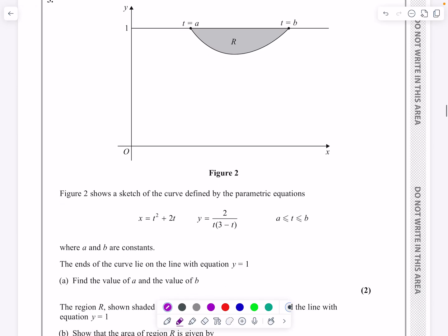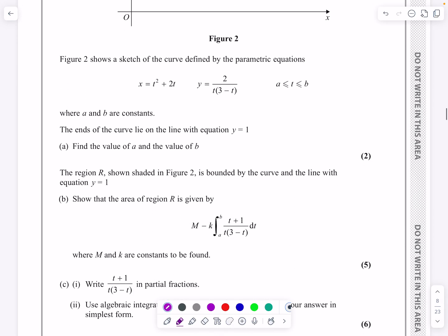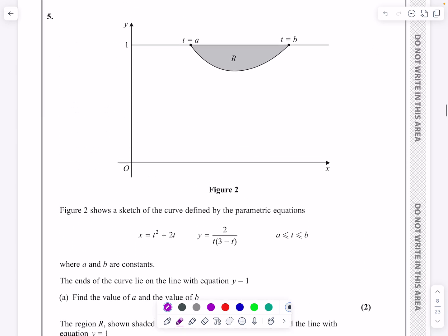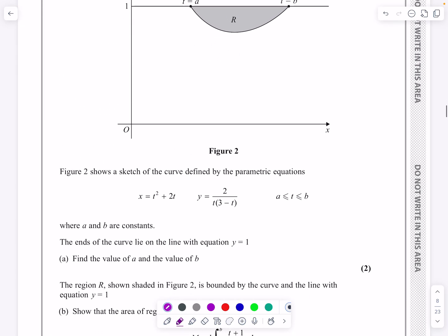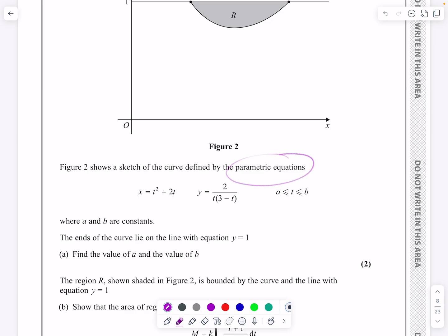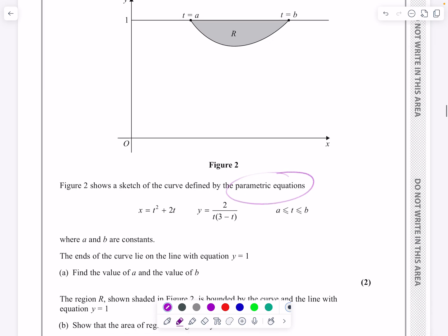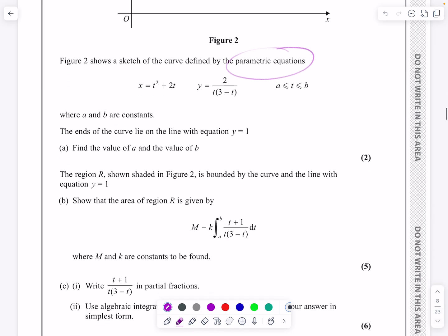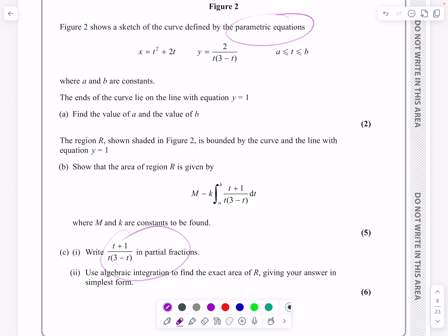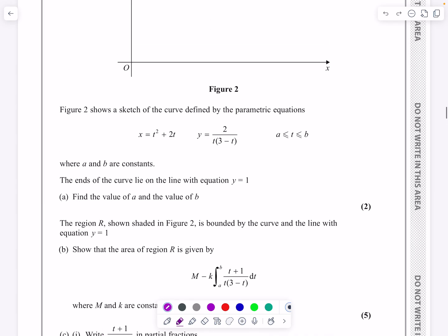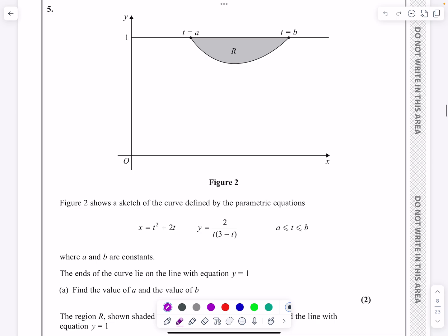Okay, this is the P4 paper from June 2024. It's question number five, and you can see this is going to be a parametric equations one. I'm going to be finding the area under a curve by integrating.